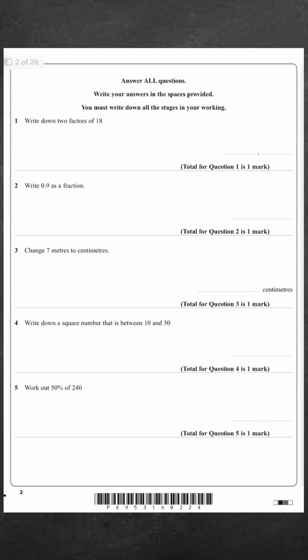Question number one, write down two factors of 18. So factors of 18 are numbers that multiply together to get 18. So you would have 1, 2, 3, 6, 9, and 18. So two answers would just be 2 and 9.